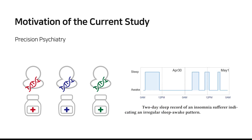This graph is an example of one actual insomnia sufferer from our research. It shows a two-day sleep record and indicates an irregular sleep-wake pattern.